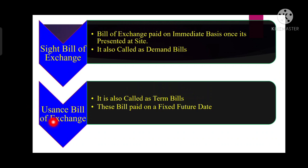Now we will talk about the usance bill of exchange, which is also called a term bill. These bills are paid on a specified future date. The usance bill is the opposite of the sight bill — whereas in a sight bill the payment must be made immediately when presented, in a usance bill payment is not made on an immediate basis. Here the payment will be made on a future date, and that fixed date is determined based on the tenor of the international trade transaction.